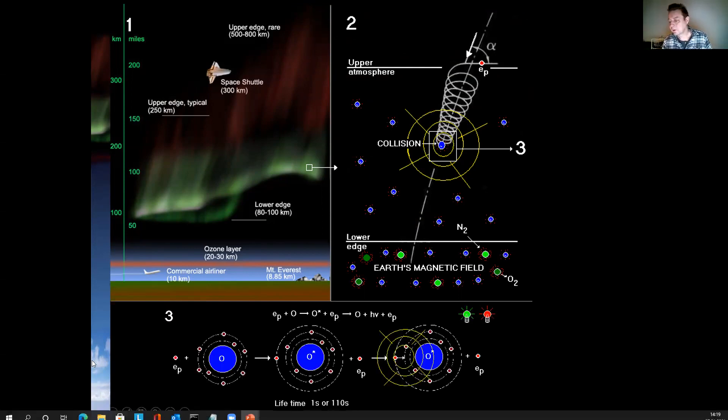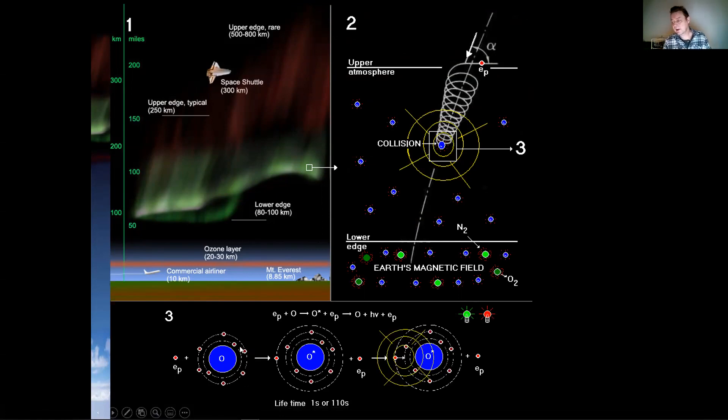And so we have a primary electron hitting, for example, an oxygen atom, which has eight electrons spinning around its core. After the collision, one of these electrons will be kicked up into a higher orbit. And when it falls down, it will emit light at a specific wavelength.